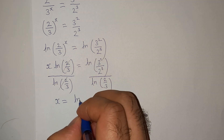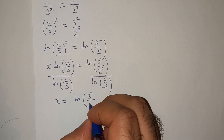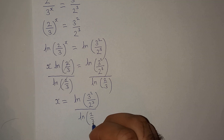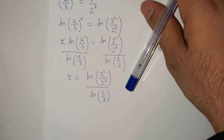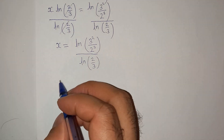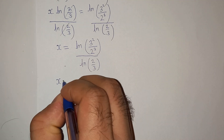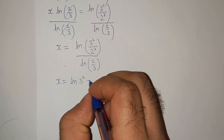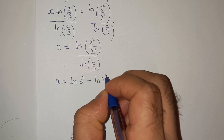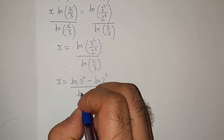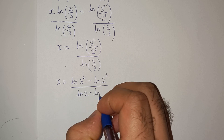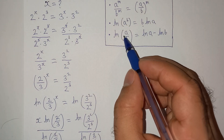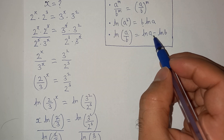On the right hand side we have log(3 squared divided by 2 cubed) divided by log(2/3). This can be written as x equals [log(3 squared) minus log(2 cubed)] divided by [log 2 minus log 3], using the logarithm formula: log(a/b) equals log a minus log b.